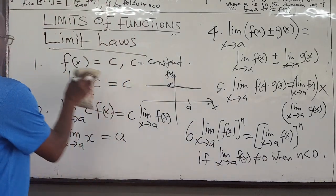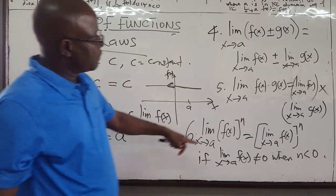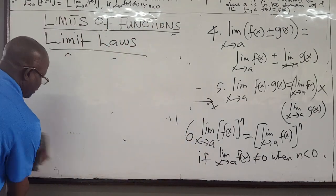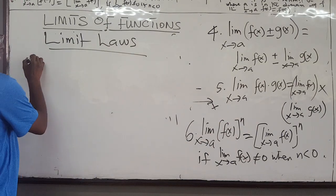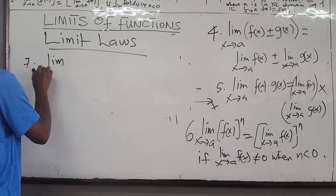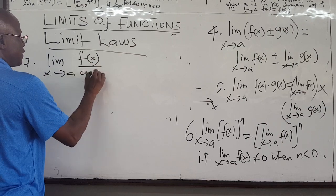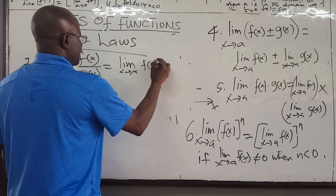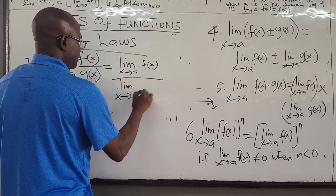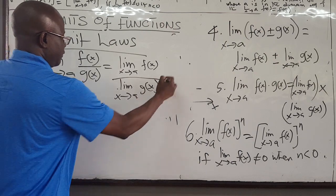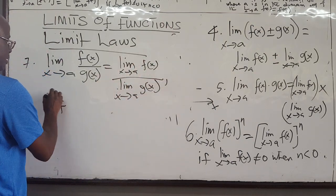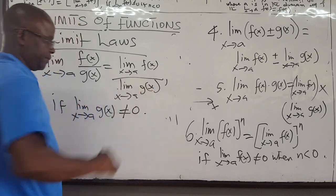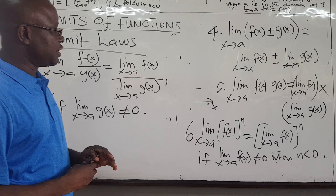Finally, we can look at the division rule. The limit as x approaches a of f(x)/g(x) — you can find the limit of the numerator and divide by the limit of the denominator. Of course, the limit of the denominator must not go to 0, otherwise this will be undefined. So these are some limit laws that we'll be using to solve examples.